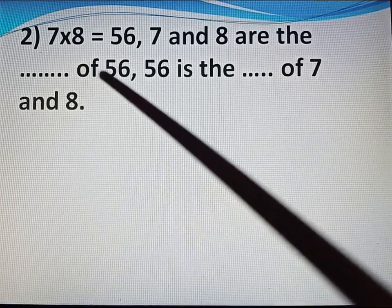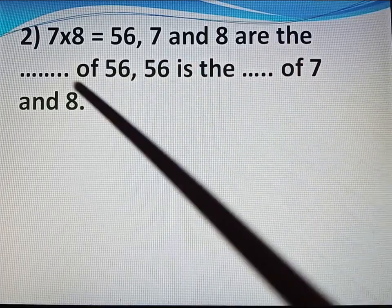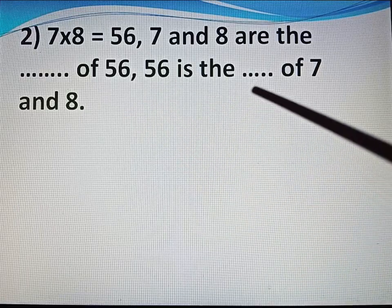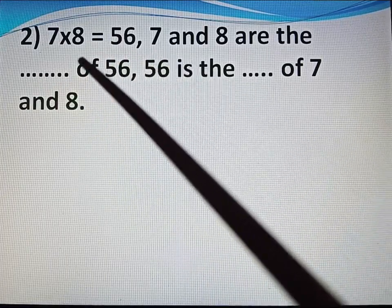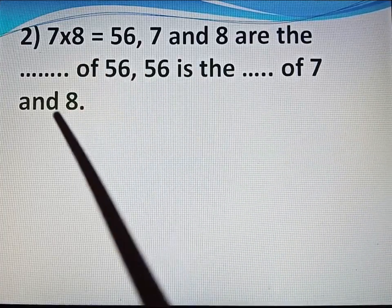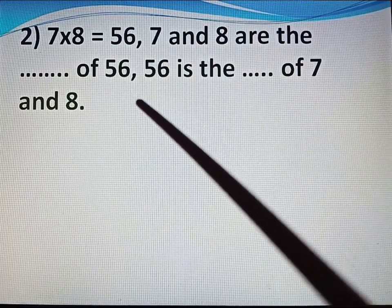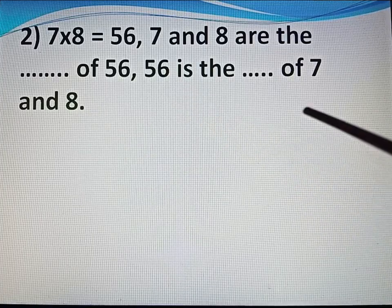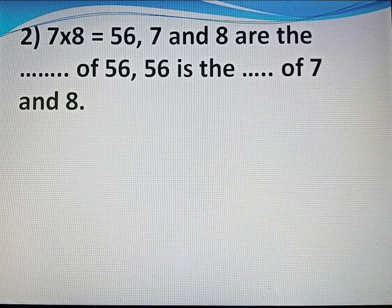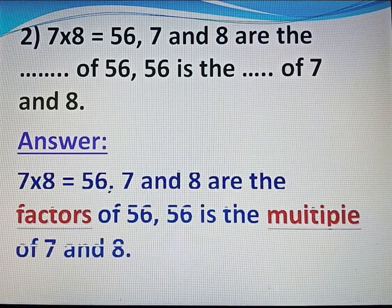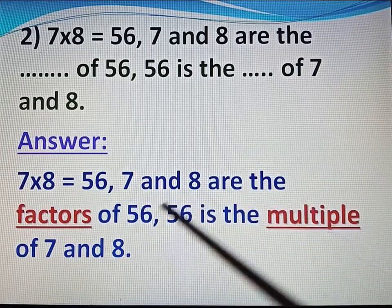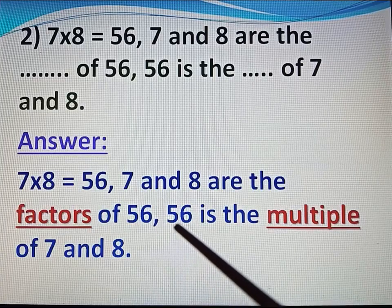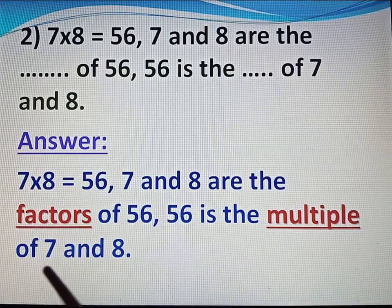Now come to question number 2. 7 multiply 8 equal 56. 7 and 8 are the dash of 56, and 56 is the dash of 7 and 8. Answer: 7 and 8 are the factors of 56, and 56 is the multiple of 7 and 8.